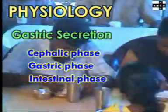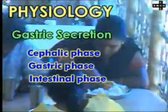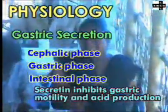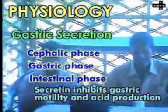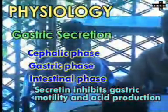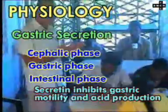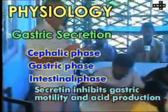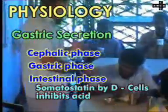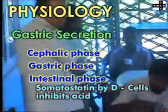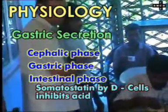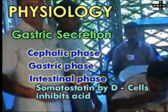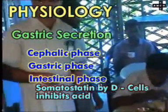In the intestinal phase, production of secretin inhibits gastric motility and acid production. Somatostatin, produced by the D cells of the stomach, also inhibits acid secretion.